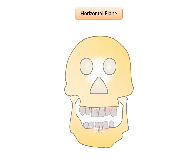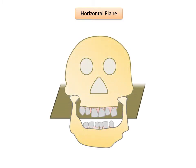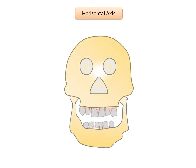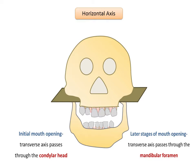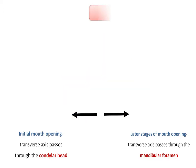The horizontal plane, also known as the transverse, axial, or transaxial plane, is an imaginary plane that divides the body into superior and inferior parts, perpendicular to both the coronal and sagittal planes. The horizontal or transverse axis runs horizontally from the right side of the mandible to the left side. Rotation around this axis is seen during protrusive movements. During initial mouth opening, the transverse axis passes through the head of the condyle, whereas during later stages of mouth opening, it passes through the mandibular foramen.